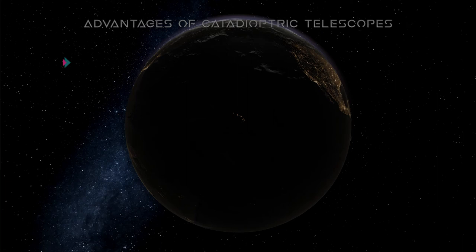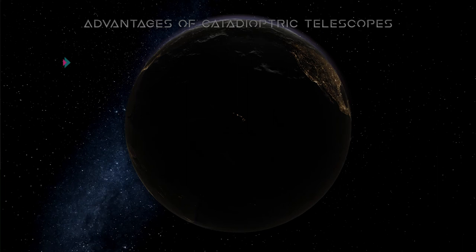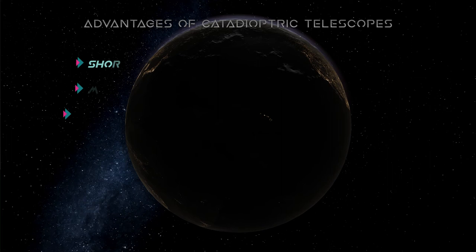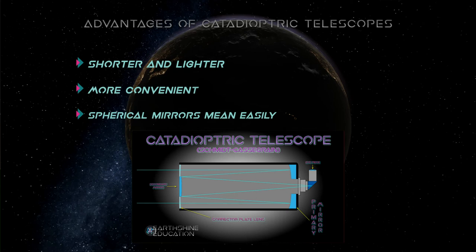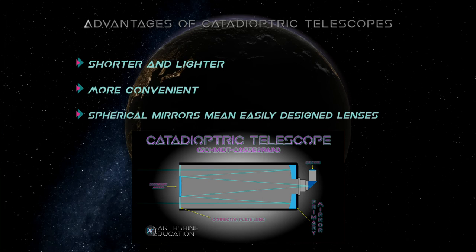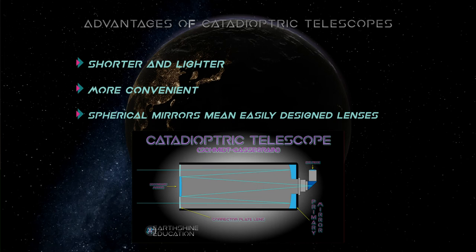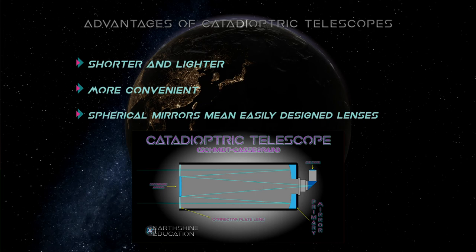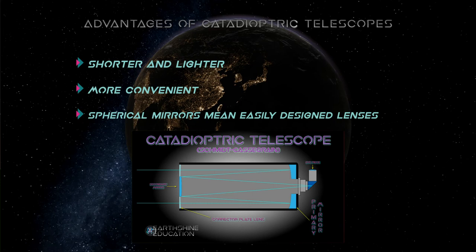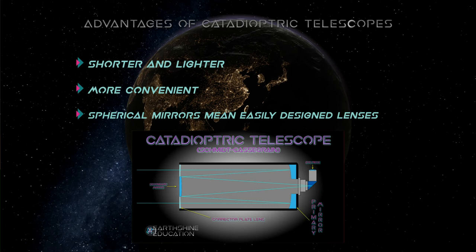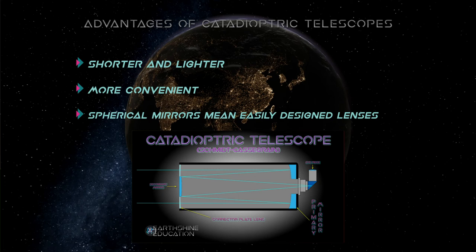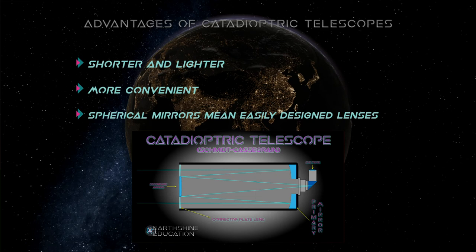The advantages of catadioptric telescopes: you get shorter and lighter telescopes overall. Because you are using a folded path optical system, you can design the telescope to be shorter in stature, shorter body, but still provide the image quality of a much larger aperture. This makes catadioptric telescopes more convenient. You can actually transport them easier. Spherical mirrors mean the lenses are easily designed. The primary mirrors of these particular telescopes can only be designed certain ways. That means the corrector lens that has to be used at the front gets to be more standardized and easier to produce. Easier production, of course, means lower cost, which means a lower cost telescope in the end for both professional and amateur consumers alike.